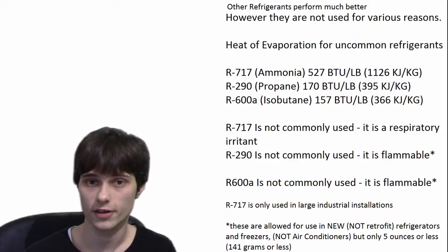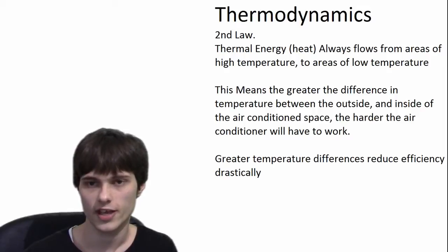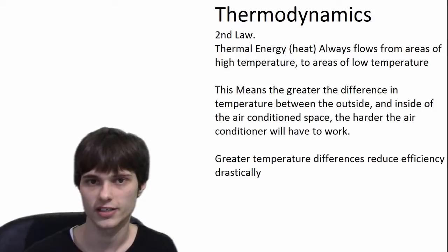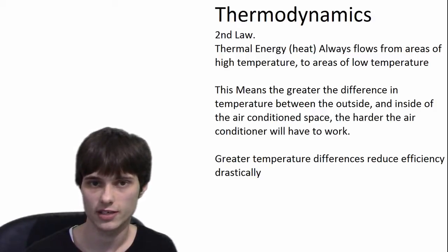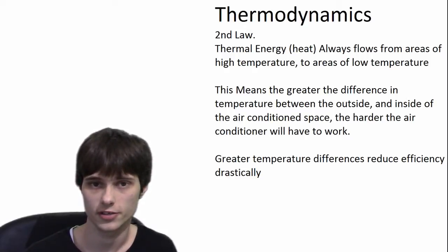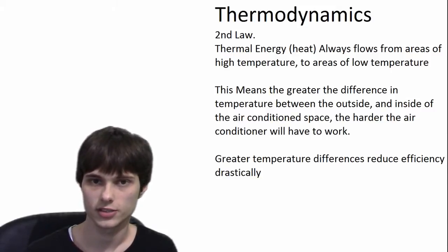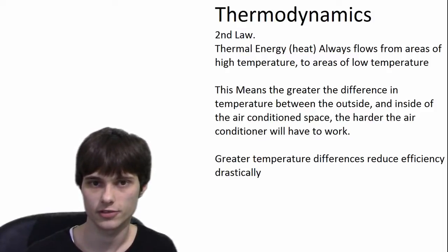The third and final reason air conditioners consume electricity is simply thermodynamics. The second law of thermodynamics is pretty clear and easy to understand: heat flows from an area of higher temperature to an area of lower temperature. What that means is simple — if it's warmer outside than it is inside, heat from outside is going to come in, and there's nothing you're going to be able to do about it. You will have to continue to run your air conditioner for as long as it's hotter outside than it is inside. The greater the difference between inside and outside, the more energy is consumed by the air conditioner. Air conditioners become much less efficient when the temperature differences are greater.